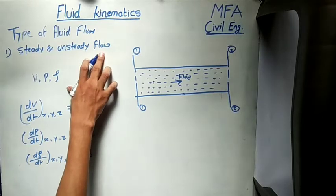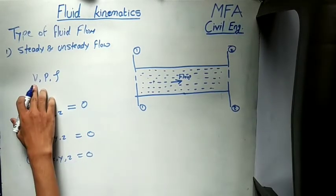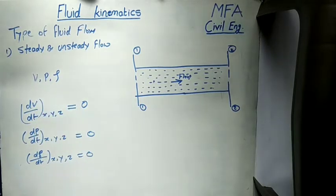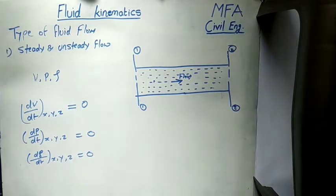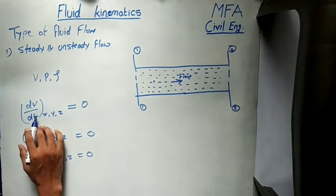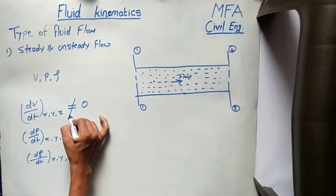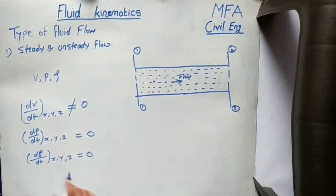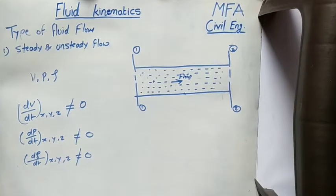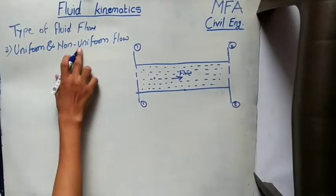Now, unsteady flow. Unsteady flow is that type of flow in which properties like velocity, pressure, and density do not remain constant with respect to time. In mathematical form, the rate of change of velocity with respect to time in any direction is not equal to zero. Similarly, the rate of change of pressure and the rate of change of density are also not equal to zero.